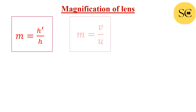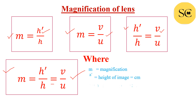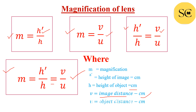Magnification of lenses — we have again four formulas: M = H'/H; M = V/U; H'/H = V/U; and M = H'/H = V/U. On the basis of given values, use the correct formula out of these four formulas. Where M is magnification, H' is height of image (unit: centimeter), H is height of object (unit: centimeter), V is image distance (unit: centimeter), and U is object distance (unit: centimeter).